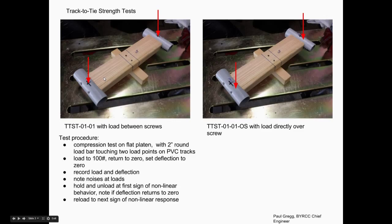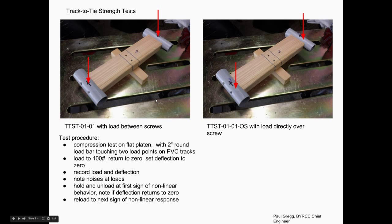Sometimes in aerospace we just do a bunch of element-level tests to find out how strong something is, and even when we do finite element modeling we do element-level tests to calibrate the analysis. I started with two specimens: what if the wheels are right over the middle of the two screws, and what if the wheel loading is over just one of the screws? How strong is that joint?